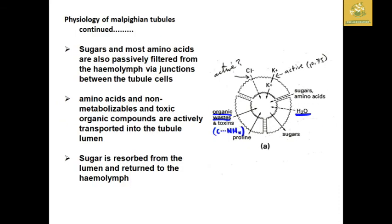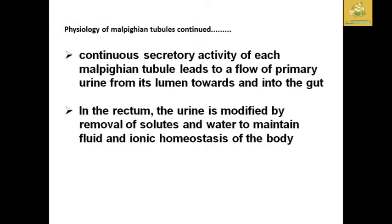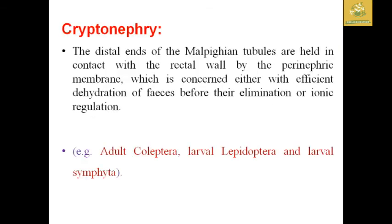Sugars and most amino acids are passively filtered from the hemolymph via the tubule cell junctions, while amino acids and non-metabolizable toxic organic compounds are actively transported into the tubule lumen. Sugars are absorbed from the lumen and returned to the hemolymph. The active secretion in each Malpighian tubule leads to a primary flow of urine from its lumen into the gut. In the rectum, the urine is modified by removal of solutes and water to maintain fluid and ionic homeostasis of the body.